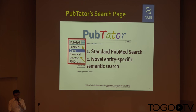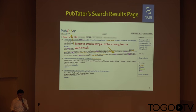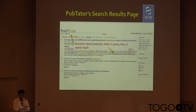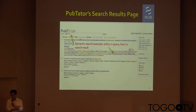This is the PubTator search page. In this page, we provide a standard PubMed search function, and also provide an entity-specific semantic search, which is different from the PubMed search, because PubMed search would use MeSH terms for the semantic search, but here we don't do that. For this example, the input is ERBB2, which is a breast cancer gene. In the first article, there is no ERBB2, but once HER2 is shown in the abstract, in PubMed this article will not be recognized or extracted from the PubMed results, but here we can recognize that they are equivalent. We return all of the articles with at least one mention of that concept.